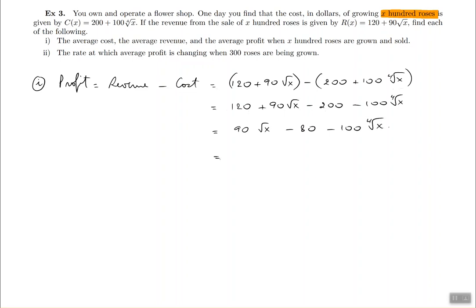I'd like to rewrite these using exponents so they're easier to work with later, for instance when differentiating. Instead of square root of X, I write X to the one half; instead of fourth root of X, I write X to the power of one fourth. This uses the rational exponent rule: a radical with base a to the M and index N equals a to the M divided by N.